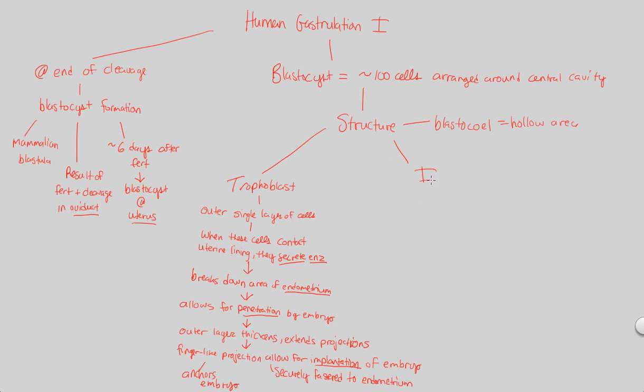Finally, the last structure to understand about the blastocyst, besides this outer layer of cells, there's an inner layer of cells. There's an inner cell mass. That inner cell mass is going to specifically be a cluster of cells that become the embryo proper. That's a term we've seen before and you should be familiar with.